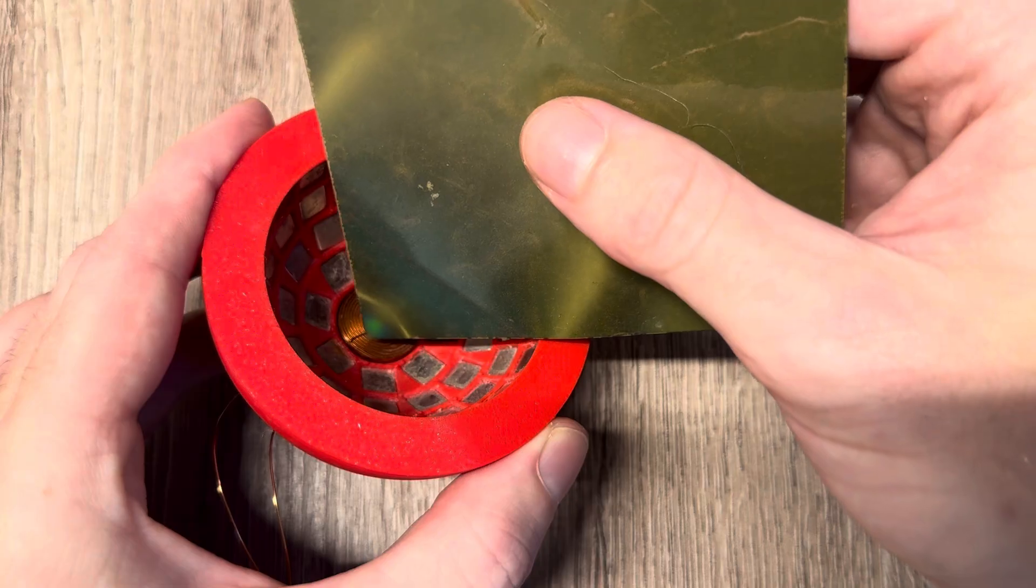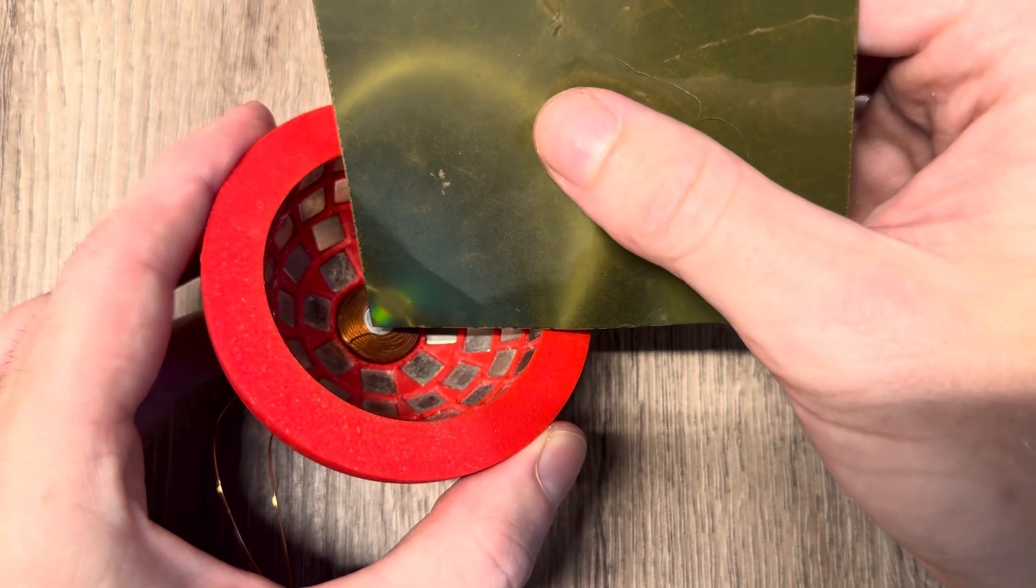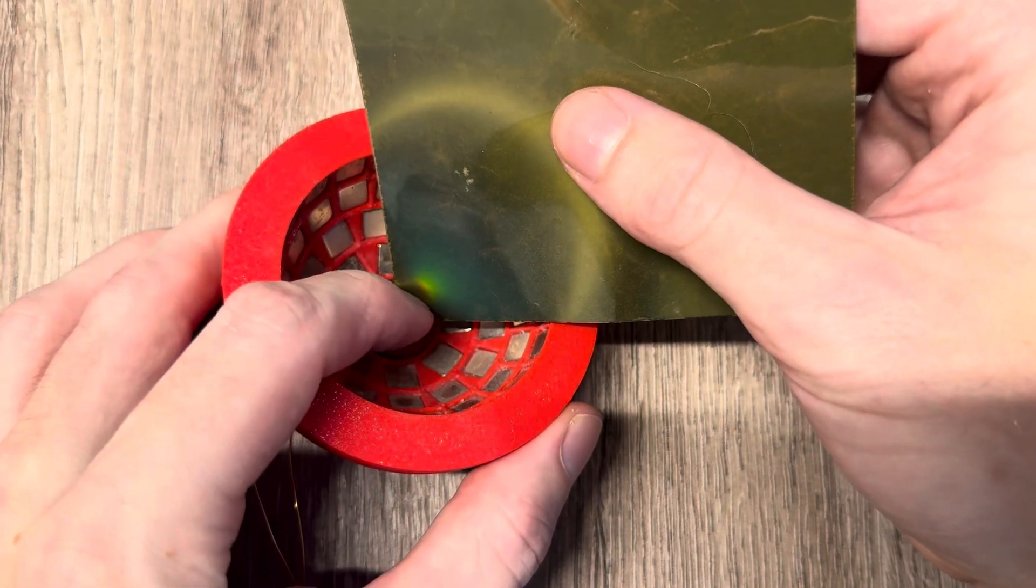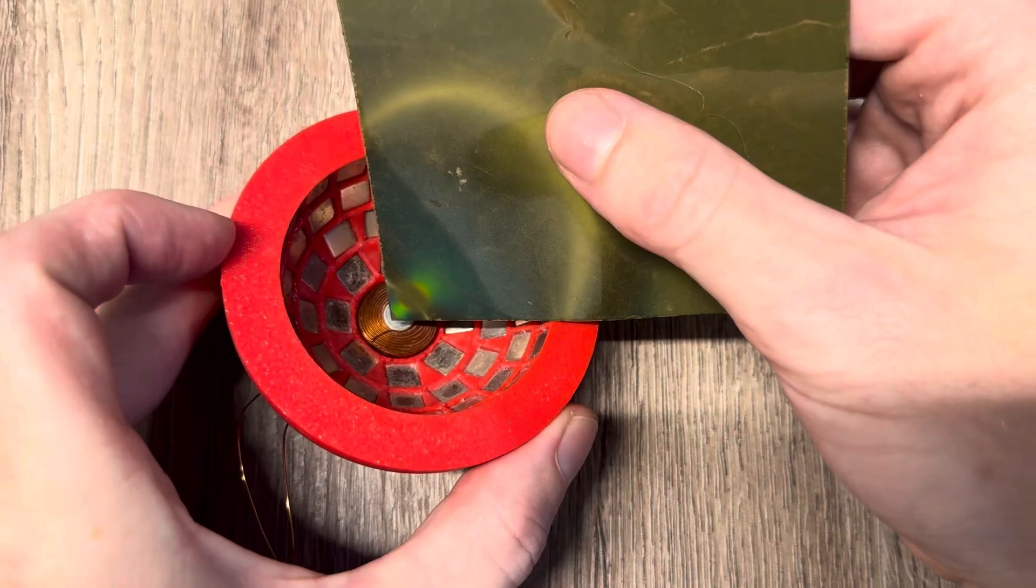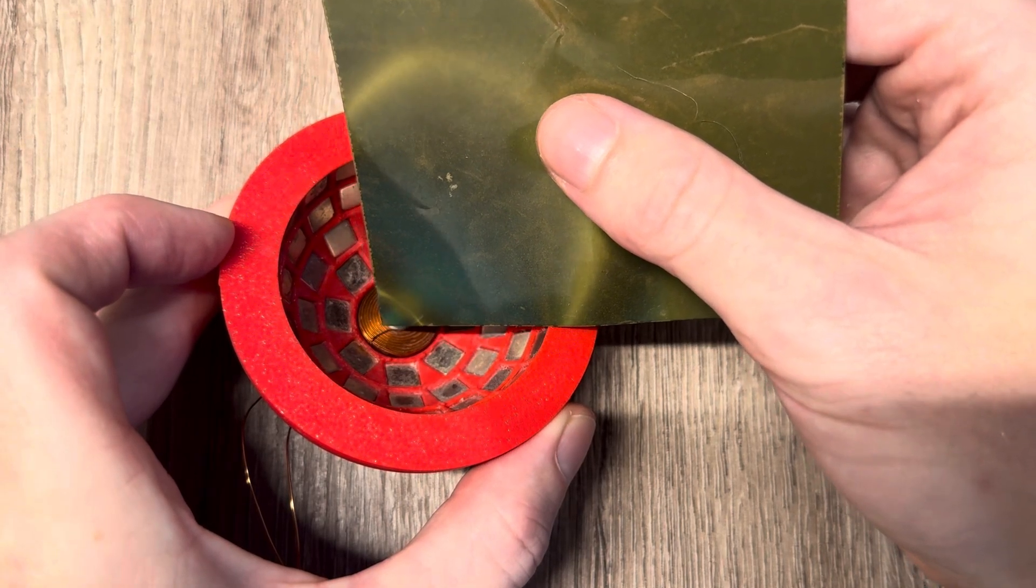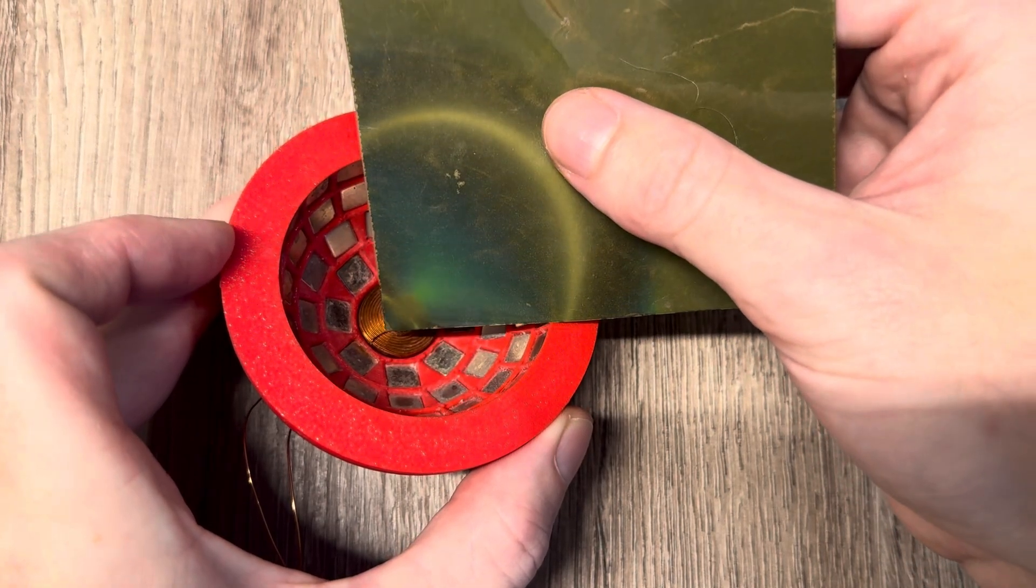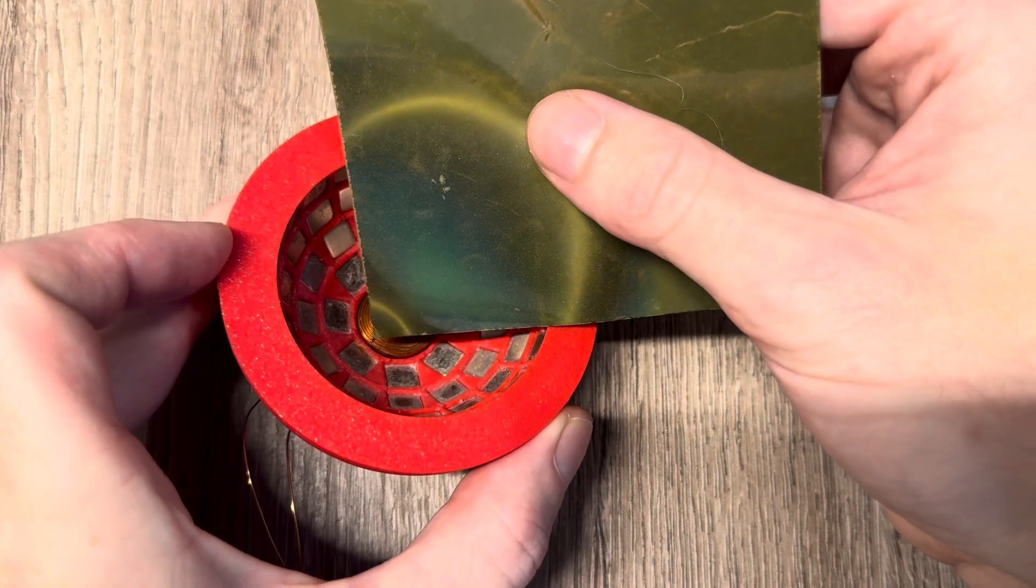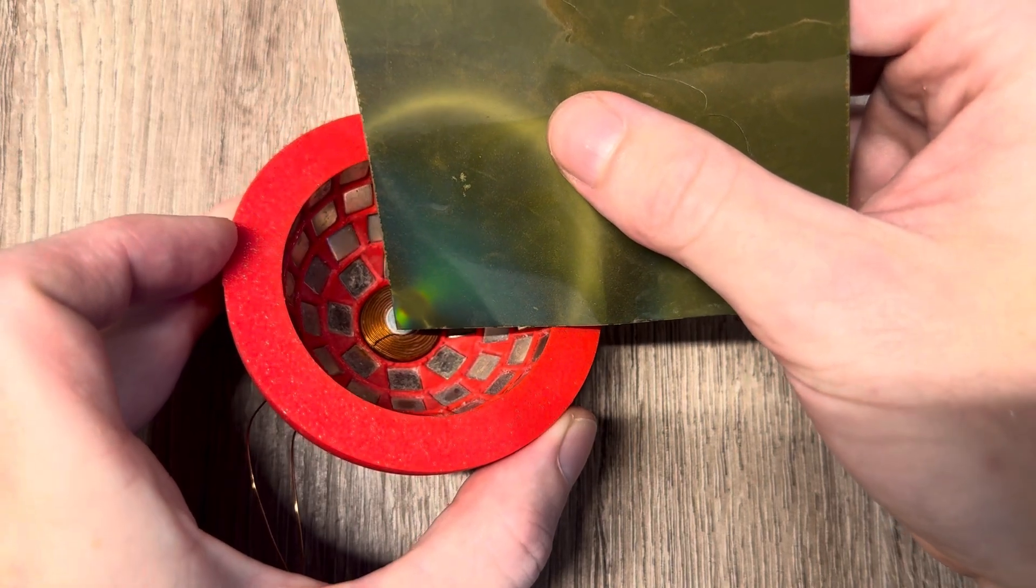You can see on the corner of the film here this blank spot, and this blank spot is basically the zero point of the field. I'm just moving around the field viewer a bit so you can get a better idea of what the field looks like.